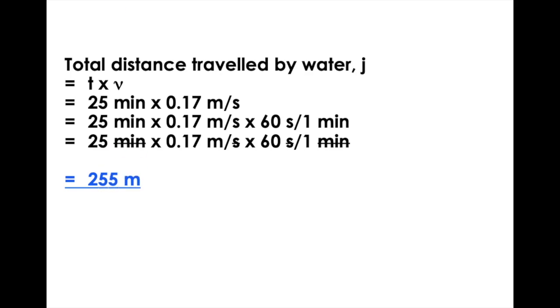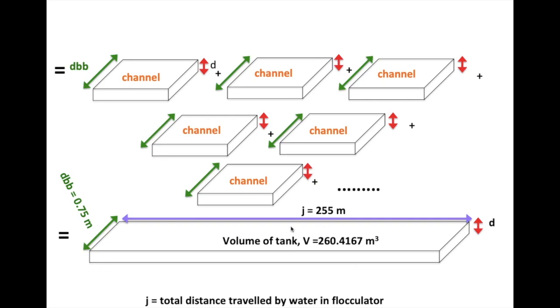With this value, okay, you have already got your j value, you have already got your volume of tank values, and the distance between baffle is 0.75 meter. This one is 255 meters and the volume is 260.4167 cubic meters.